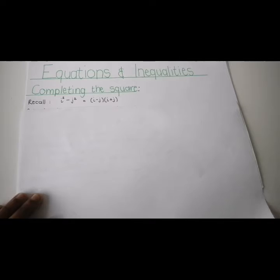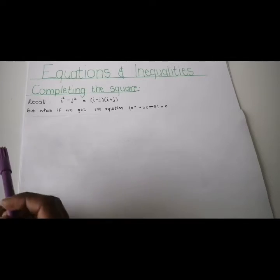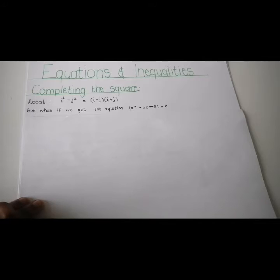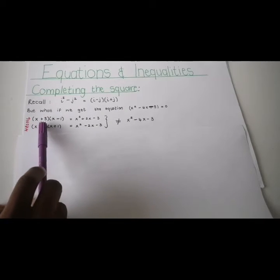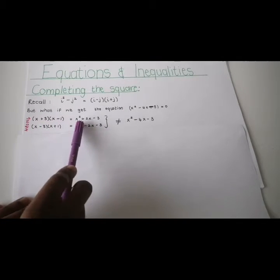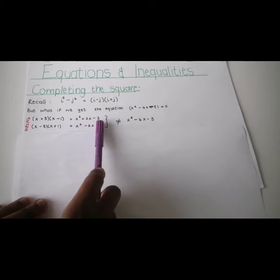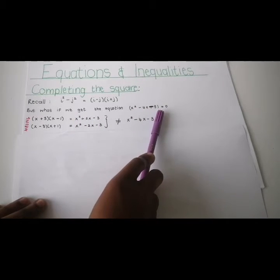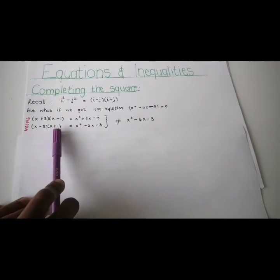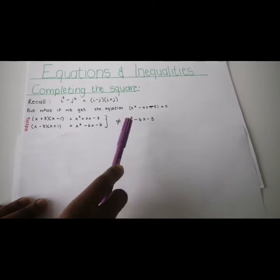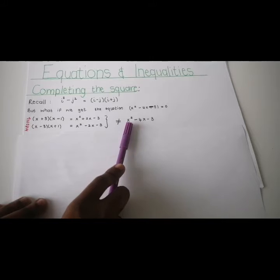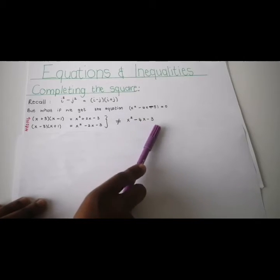What happens if we get an equation that looks like x squared minus 4x minus 3? When you try and use the same logic — x plus 1 times x minus 1, or x minus 3 times x plus 1 — when you multiply it out, it still doesn't give you x squared minus 4x minus 3.